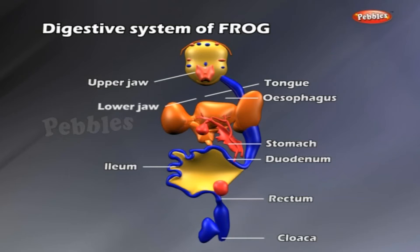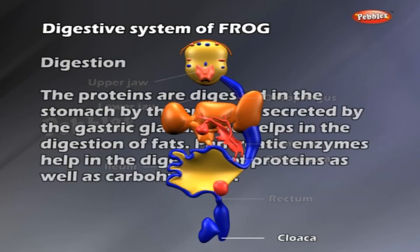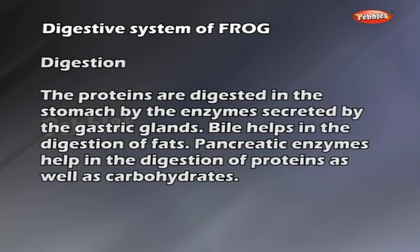Digestion. The proteins are digested in the stomach by the enzymes secreted by the gastric glands. Bile helps in the digestion of fats. Pancreatic enzymes help in the digestion of proteins as well as carbohydrates.